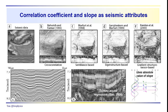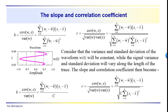The slope does a good job of enhancing structural details through time. What I asked you to think about last time was whether there is a relationship between the correlation coefficient and the slope. Let's look at those relationships: slope equals covariance over variance; correlation coefficient equals covariance over the square root of the product of the variances. We are using the waveform W as a reference function — our independent variable — sliding it down through the seismic trace and calculating the slope, intercept, and correlation coefficient.